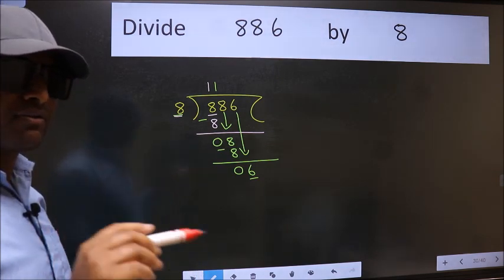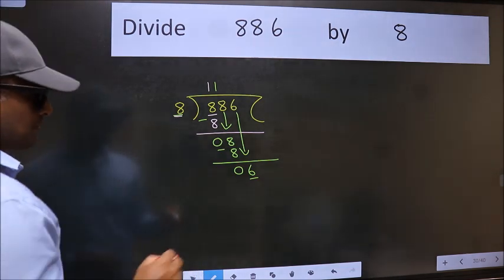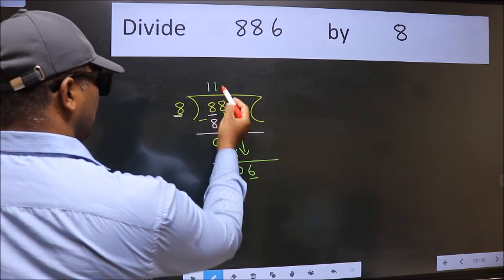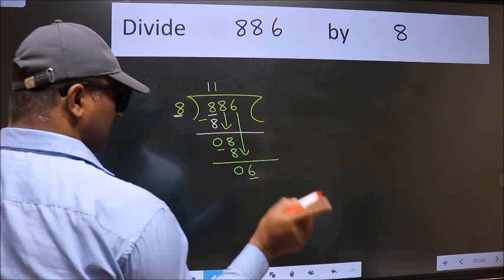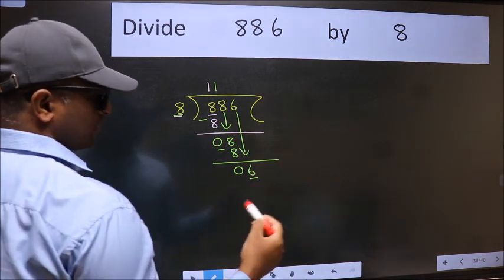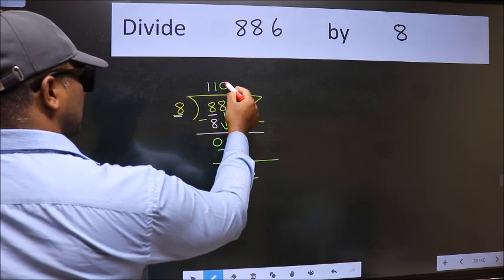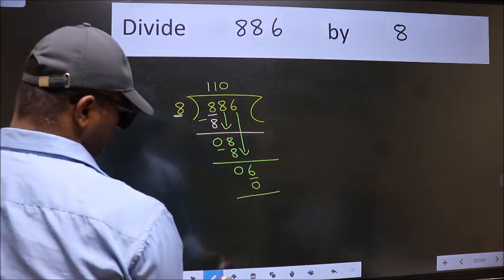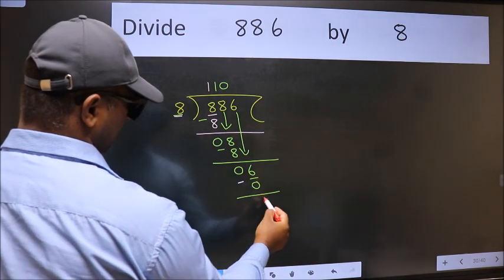Instead of that, what we should think of doing is which number should we take here. If I take 1 we will get 8, but 8 is larger than 6. So what we do is we take 0. 8 into 0 is 0. Now we subtract. We get 6.